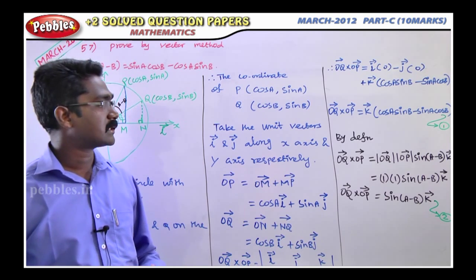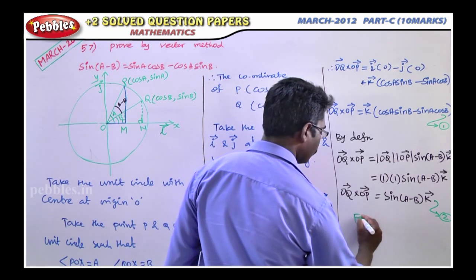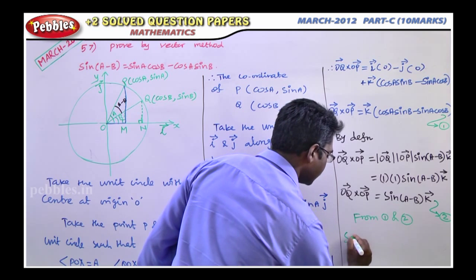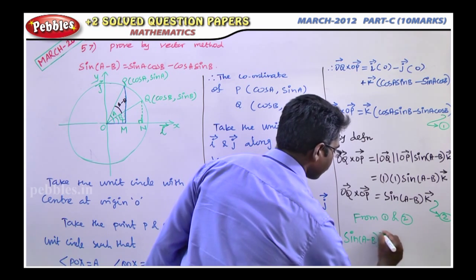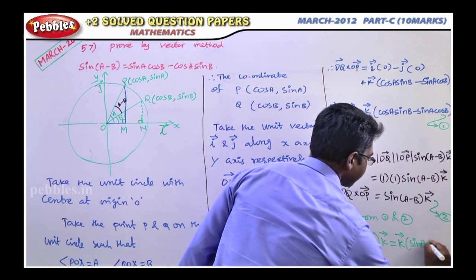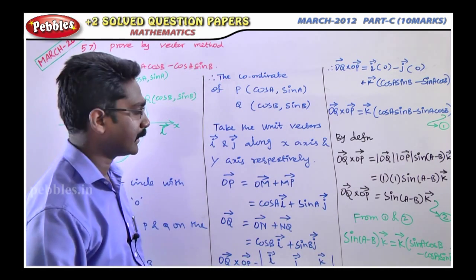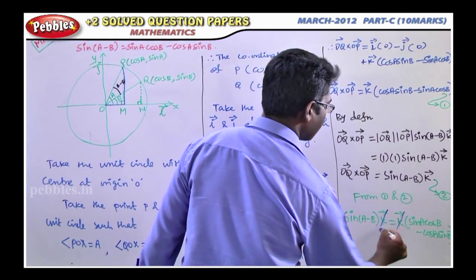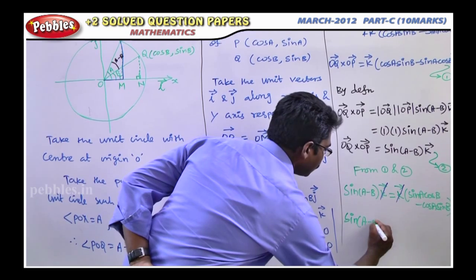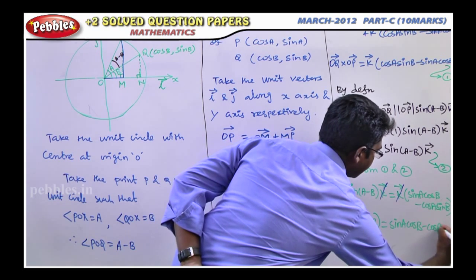Equating the left-hand sides of equations one and two: both equal OQ cross OP, so the right-hand sides are equal. Therefore sin(A minus B) times k-vector equals k-vector times (cos A sin B minus cos A sin B). Cancelling k-vector from both sides gives sin(A minus B) equals sin A cos B minus cos A sin B. This completes the proof.